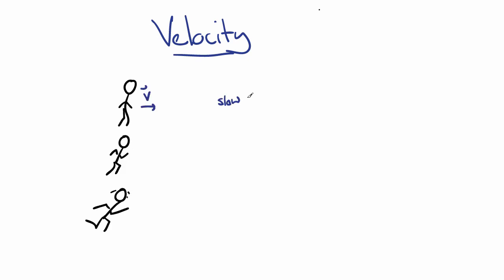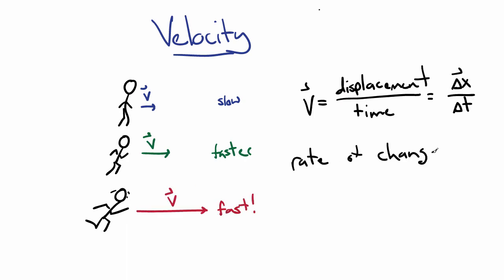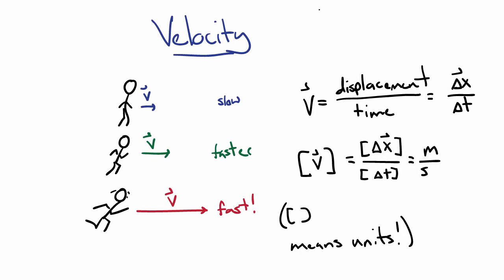Velocity is the rate of change of the displacement, or in other words, the displacement divided by time. Whenever we describe a quantity using the phrase rate of change, you can bet that you'll have to divide by time at some point. Using this basic definition, we can see that the units of velocity must be length per time, or in SI, meters per second.